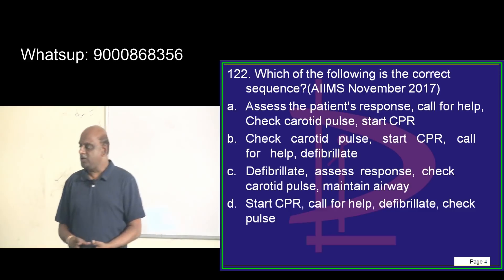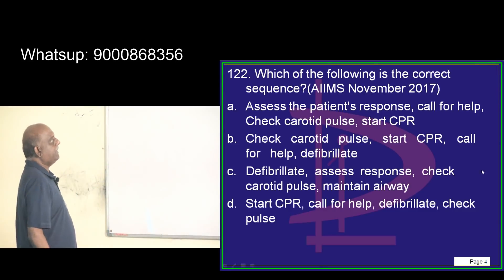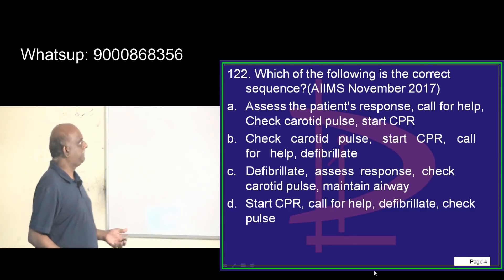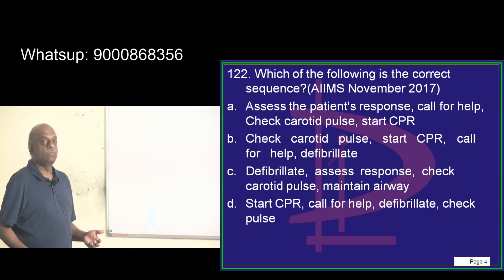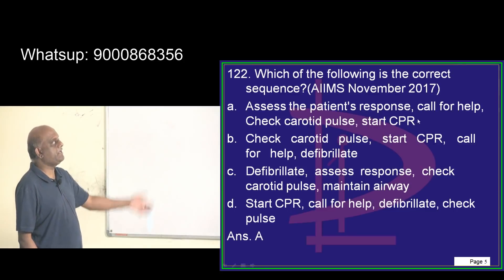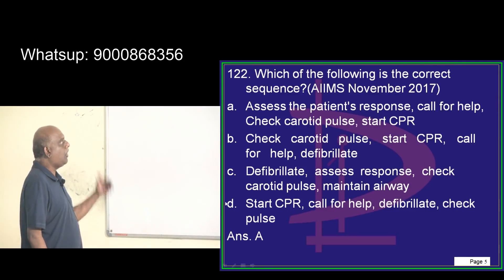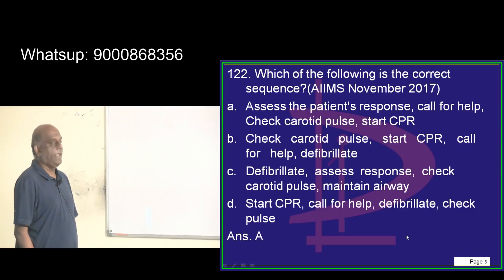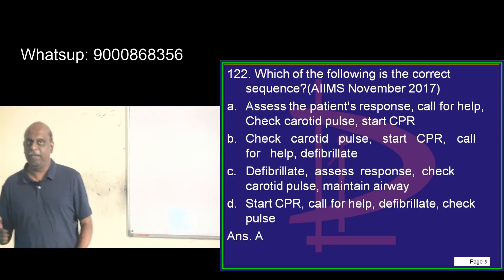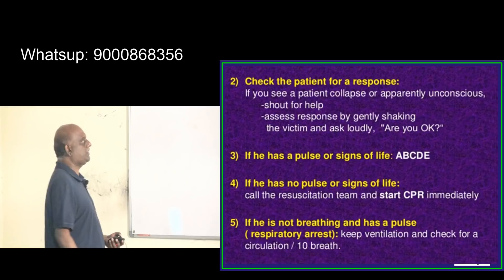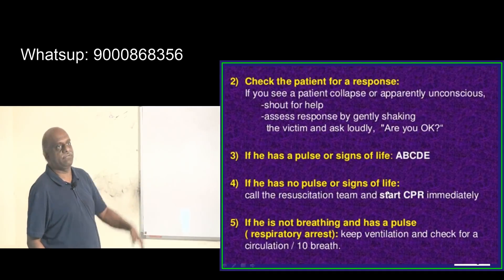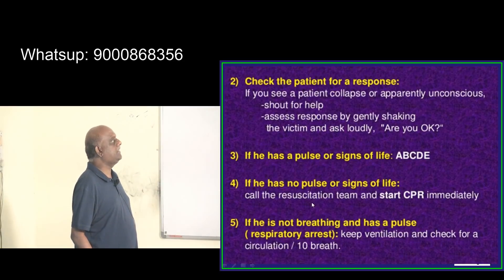With regard to the correct sequence when managing a case with pulselessness: first, assess the patient's response; call for help; check the carotid; and then start CPR. This is the correct order in which you rescue a patient in an emergency. Check the patient for a response — if there is a pulse or signs of life, check that.